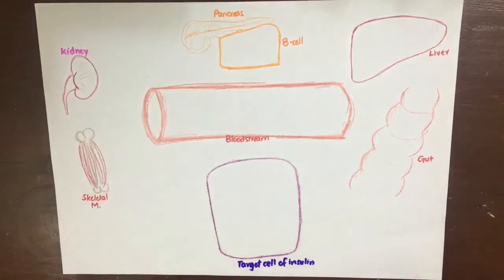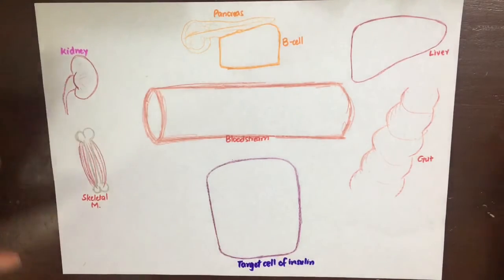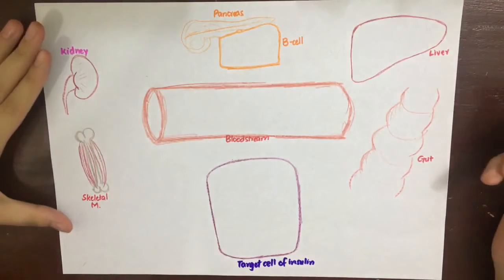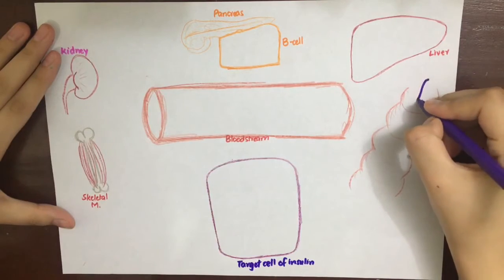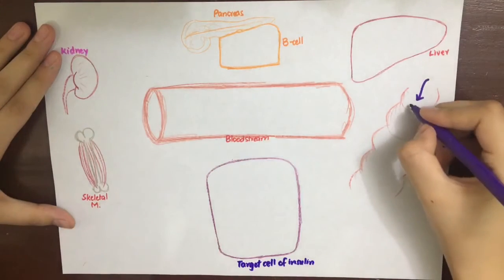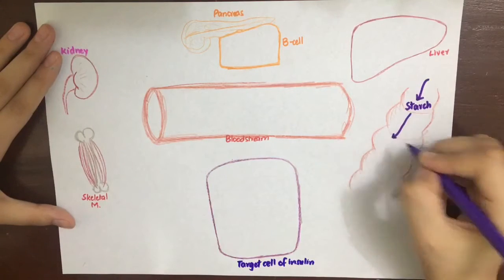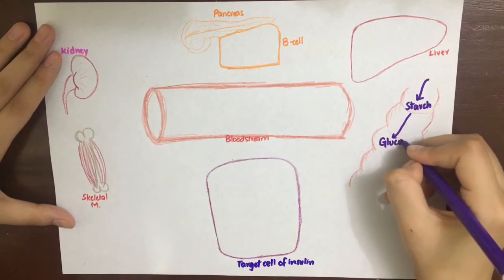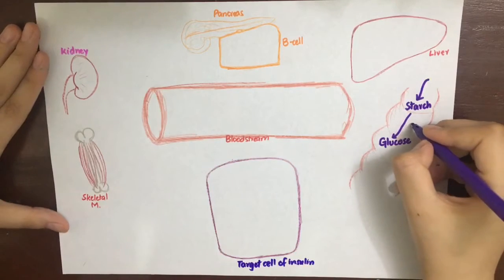Before starting oral antidiabetic drugs, I wanted to make a few things clear so that the mechanism of action and the site of action of these drugs is clear and easy to understand. We'll start with the intake of food or starch, which is broken down by alpha-glucosidase in the gut so that it can be absorbed easily into the blood.